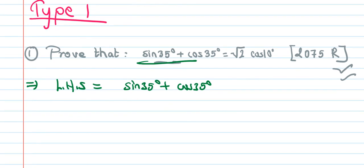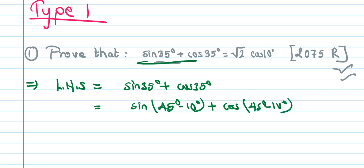cos35° — since 35° is not a standard angle (standard angles are 30°, 45°, 60°, 90°, 180°, 270°, 360°), we cannot get an exact value directly. So we rewrite 35° as 45° − 10°, giving sin(45° − 10°) + cos(45° − 10°).